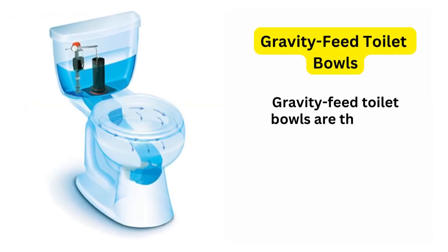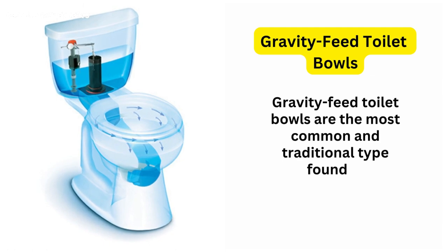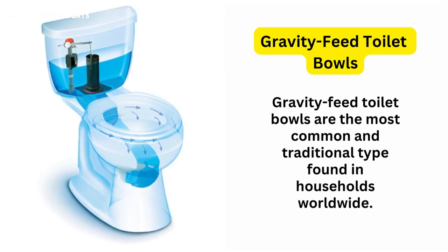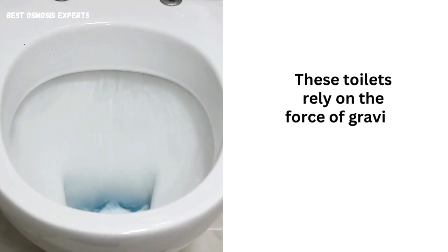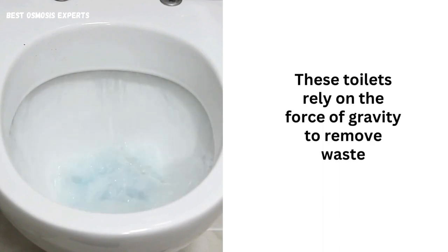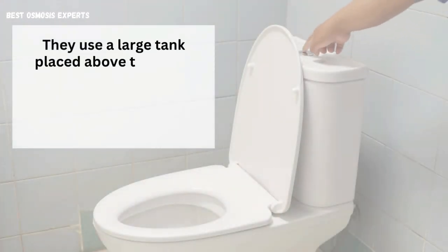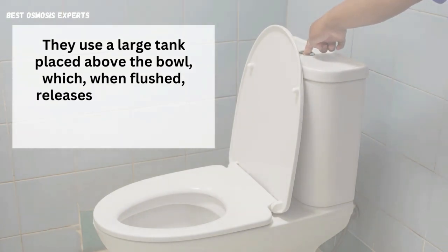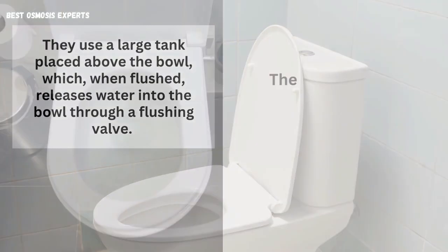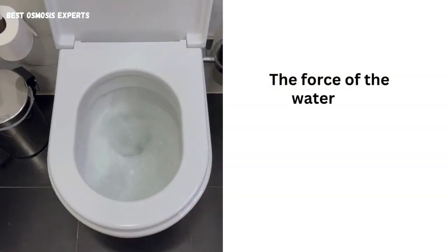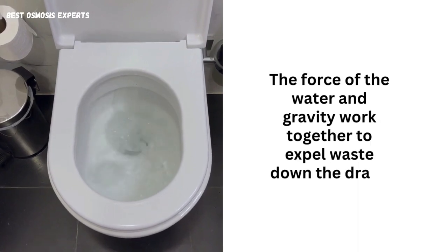Gravity feed toilet bowls are the most common and traditional type found in households worldwide. These toilets rely on the force of gravity to remove waste efficiently. They use a large tank placed above the bowl, which, when flushed, releases water into the bowl through a flushing valve. The force of the water and gravity work together to expel waste down the drain.